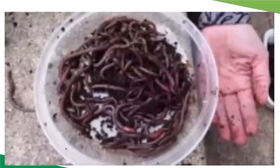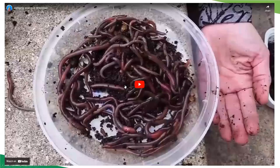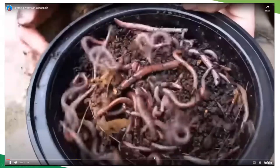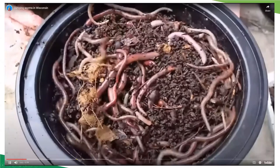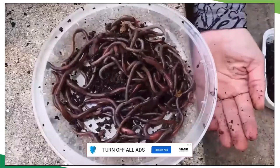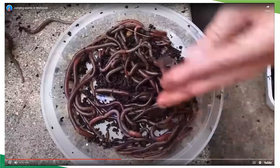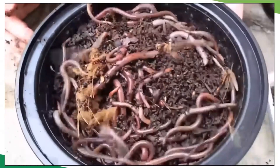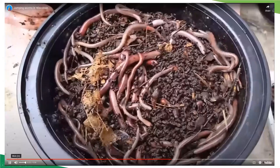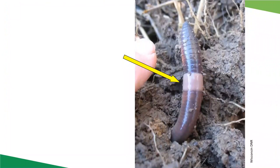Here's a short video from Wisconsin showing some of the movement of these worms. You can see them undulating back and forth, sliding, and then flipping around when touched and bothered. Those are good identifying characteristics for jumping worms in the field.